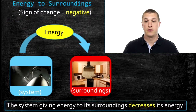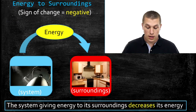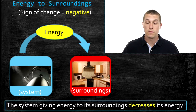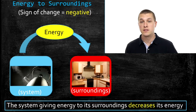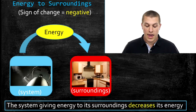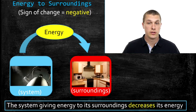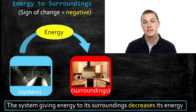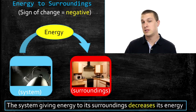What we're thinking about is the transfer of energy. Here I have another example of a system and a surroundings. We have the system — in this case, it's a tea kettle that's steaming — and the surroundings, which is our kitchen. That tea kettle which is steaming is putting off heat energy into its surroundings, the kitchen. It's transferring energy from the system to the surroundings. And when that happens, we say that the change in internal energy is negative.